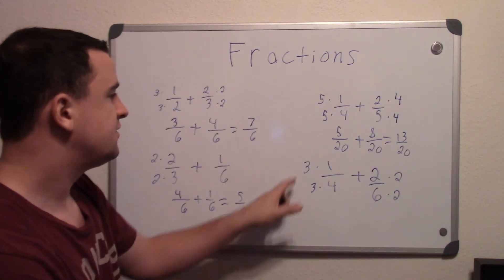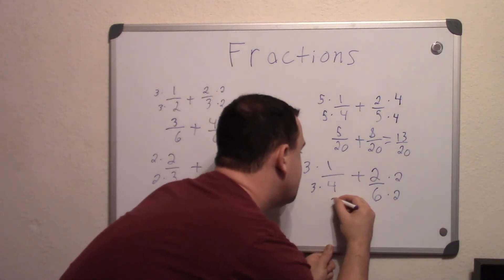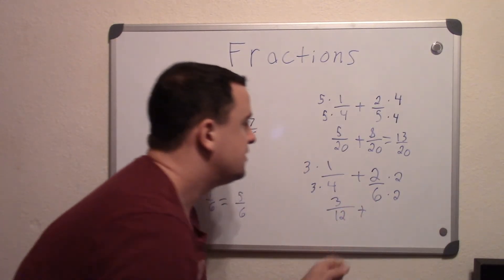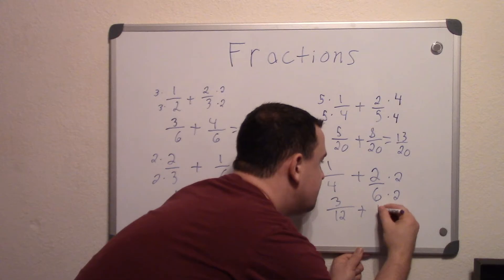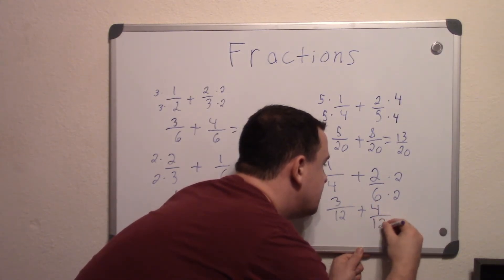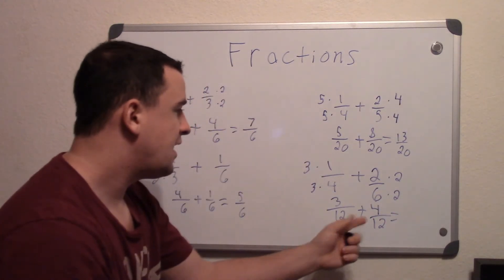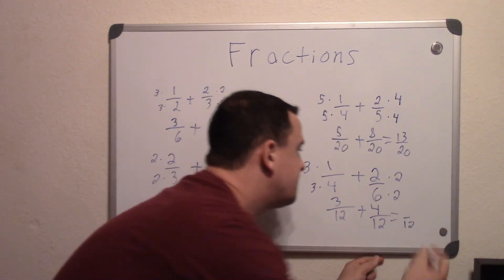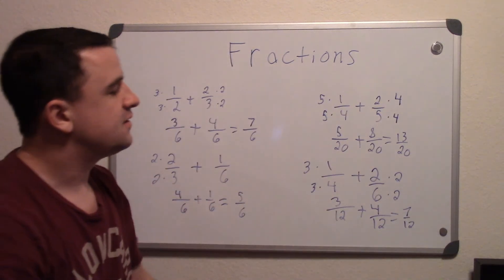And now we again bring those down. So 3 times 1 is 3, and our denominator is 12, plus 2 times 2 is 4, and again, 12. And now again, you add them. The bottom number is going to be the same. 3 plus 4 is 7, and that's our answer, 7/12.